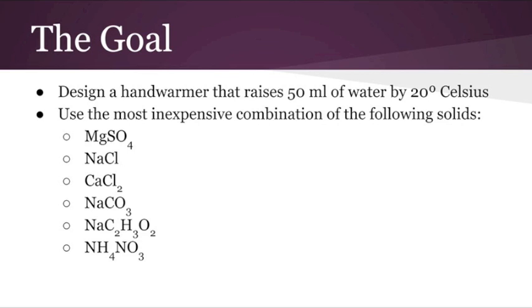We tested seven ionic compounds: magnesium sulfate, sodium chloride, calcium chloride, sodium carbonate, sodium acetate, and ammonium nitrate, to see which would make the most efficient hand warmer.